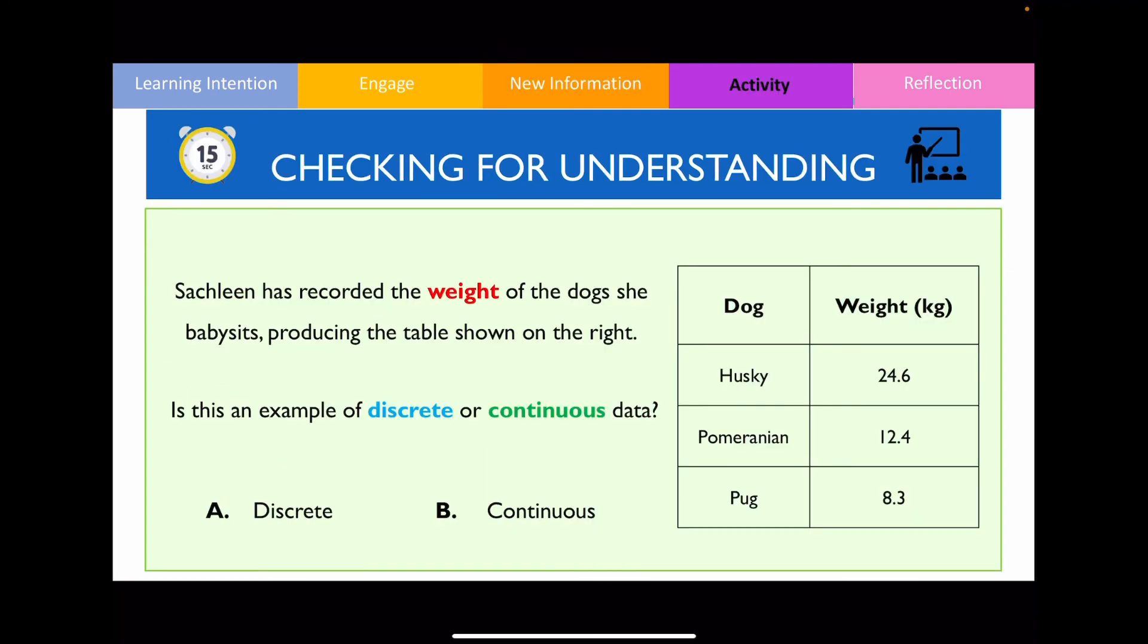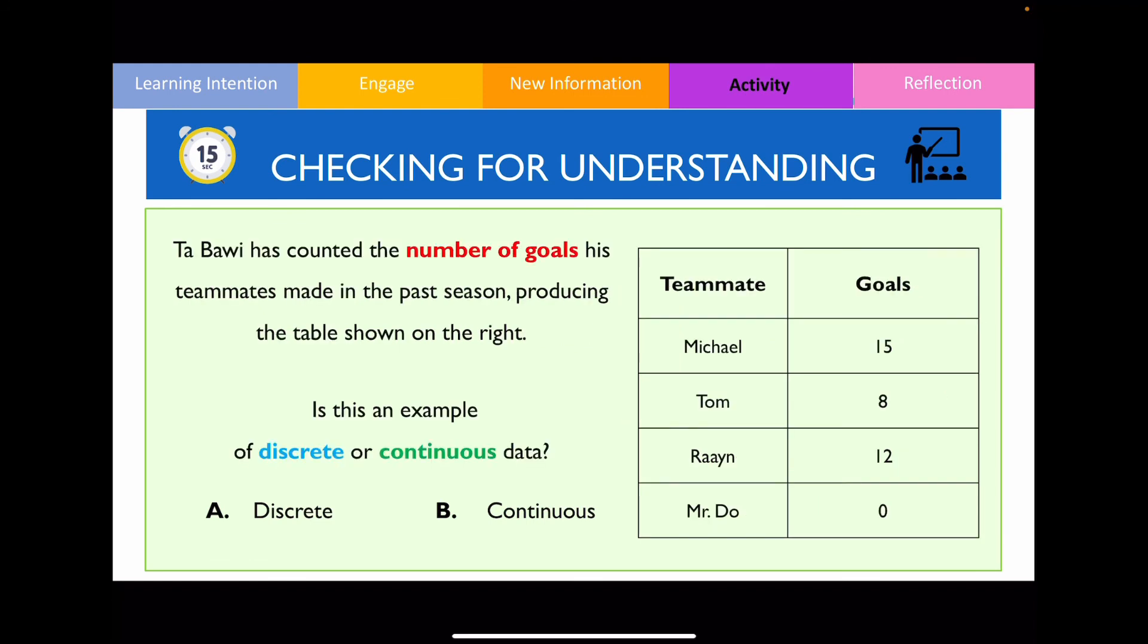Have a go at identifying whether the following example is an example of discrete or continuous data. If you answered this question correctly, this is going to be an example of continuous data because the mass or the weight of a dog can always vary and take on any values within a given range.